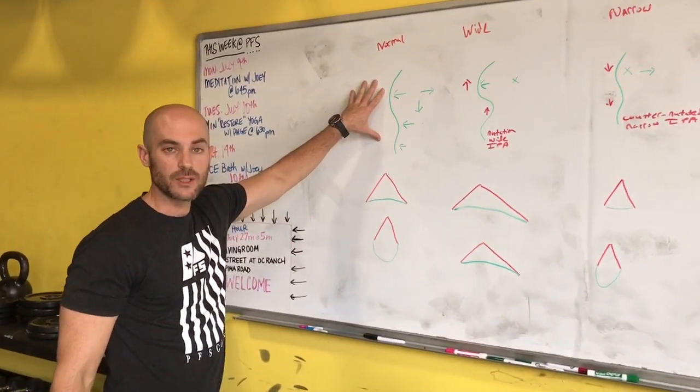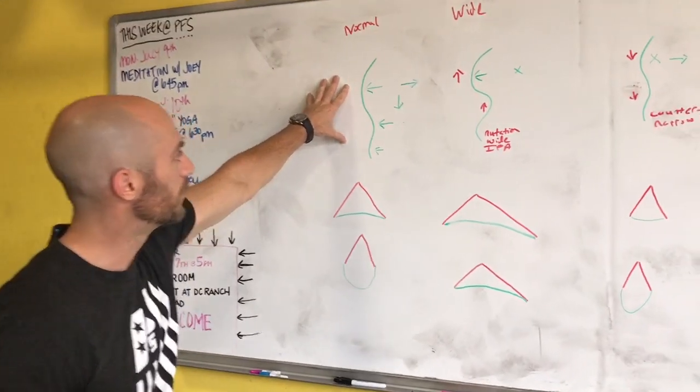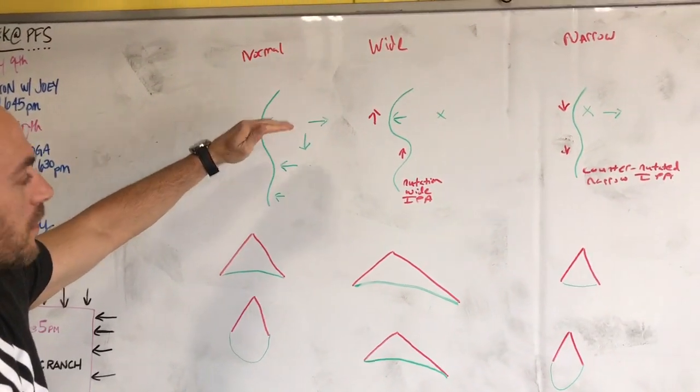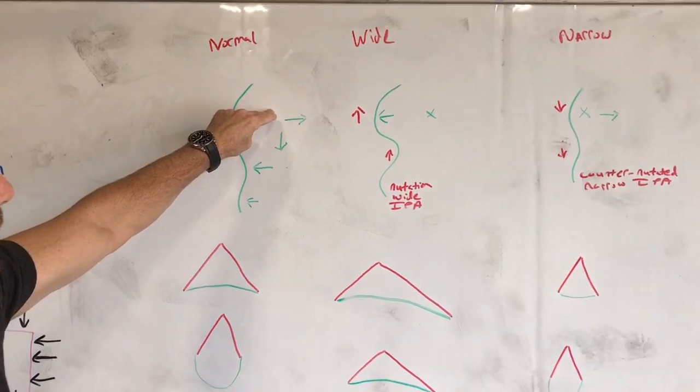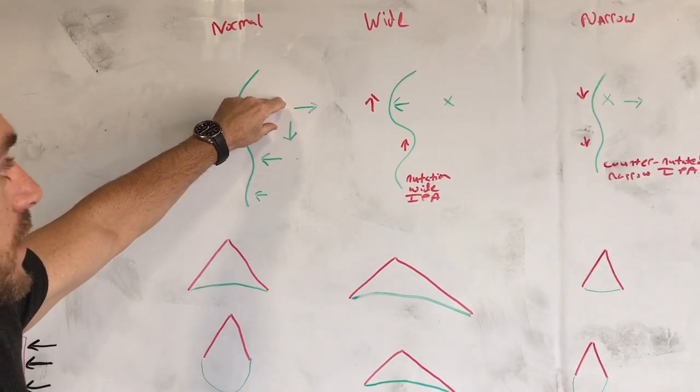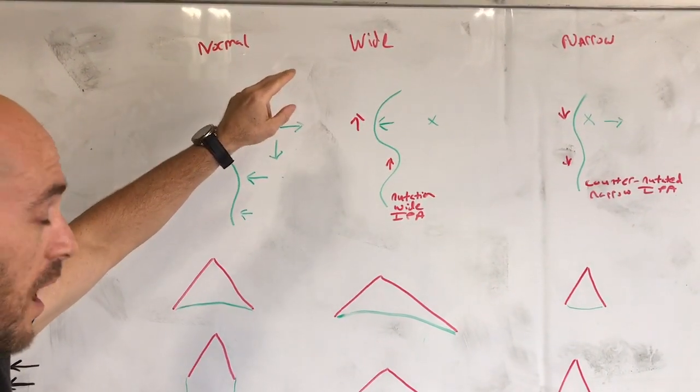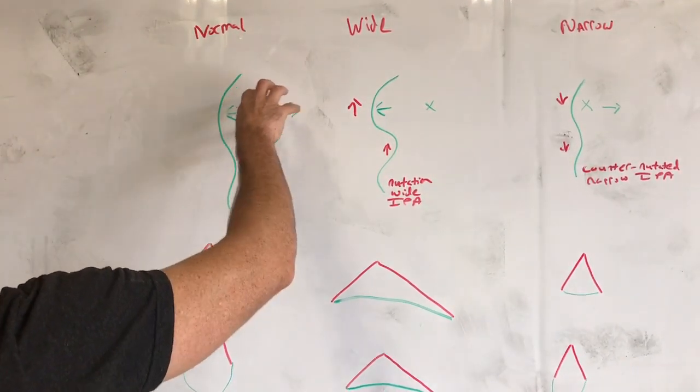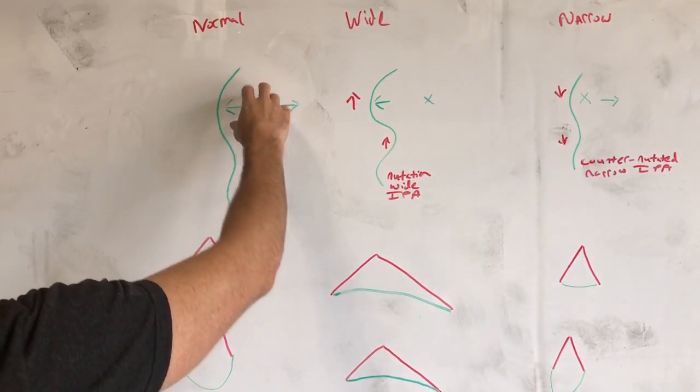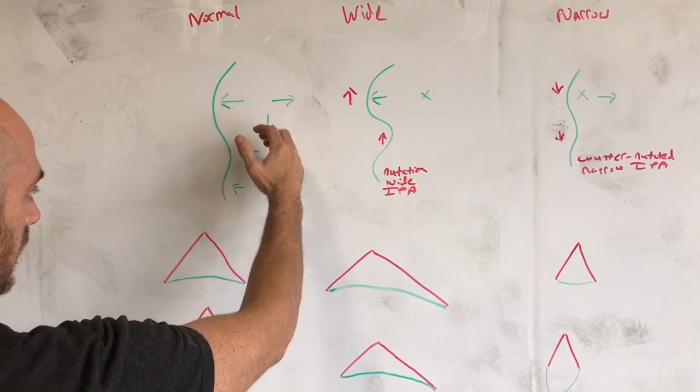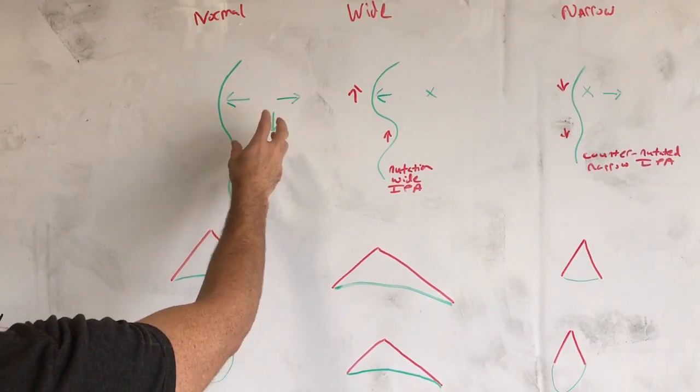So normal skeletal mechanics with inhalation, with taking a breath in. The diaphragm drops, the pleural pressure—the pressure in my lung, in my thoracic cavity—decreases. That allows pressure to move from high to low, so air comes in and pressurizes my thoracic cavity.